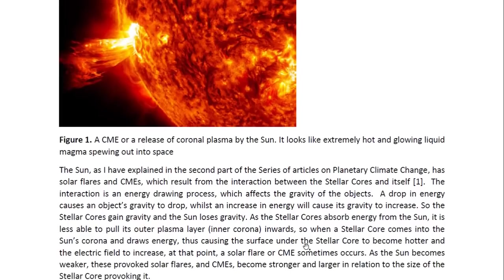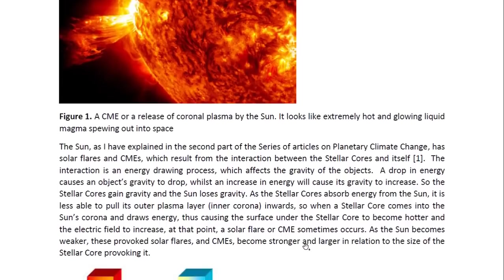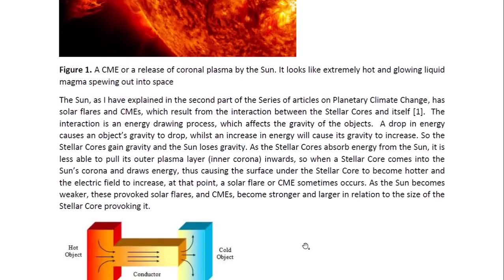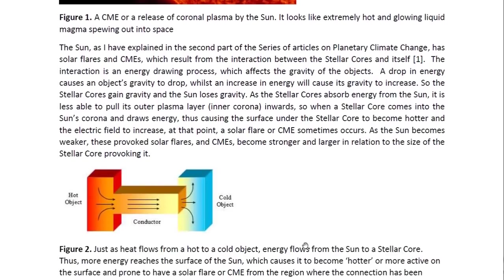As the stellar course absorbs energy from the sun, it is less able to pull its outer plasma layer or inner corona inwards. So when the stellar core comes into the sun's corona and draws energy, causing the surface under the stellar core to become hotter and the electric field to increase at that point, a solar flare or CME sometimes occurs. As the sun becomes weaker, these provoked solar flares and CMEs become stronger and larger in relation to the size of the stellar core provoking it.